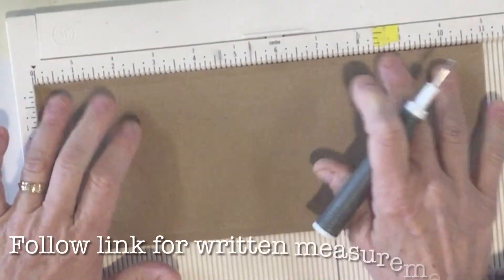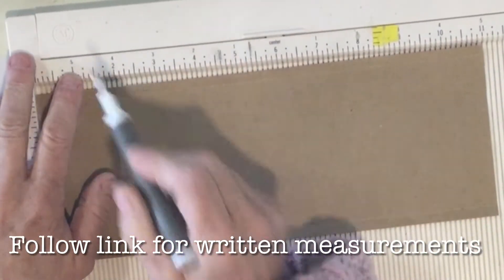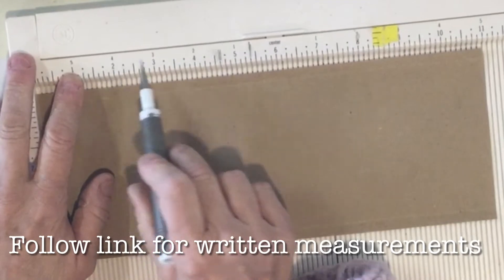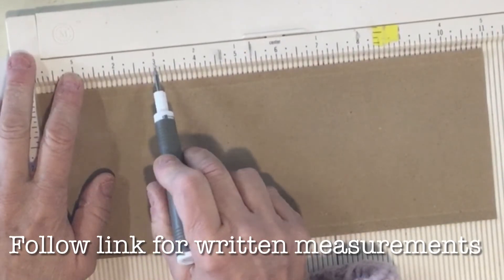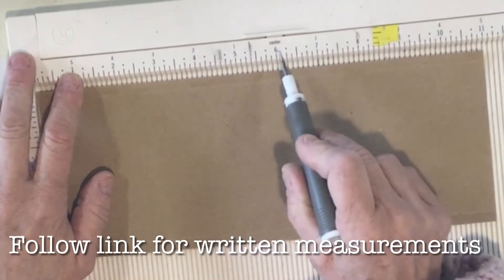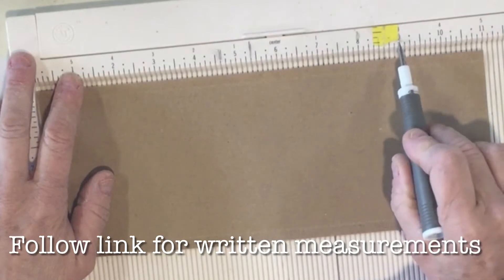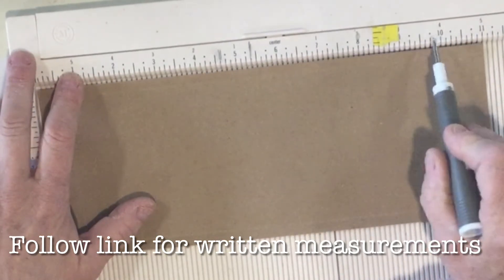Next I'm going to score at one inch, then two inches away which will be three inches, then one inch again which is four, two inches which is six, one again at seven, two at nine, and the last one at ten.